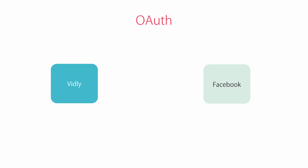Here's how OAuth works. Let's say John is a new staff member and wants to log into Vidly with his Facebook account. First of all, we need to register our application with Facebook to create some kind of partnership. Facebook will give us an API key and a secret, kind of like a username and password. We'll use this to talk to Facebook under the hood.